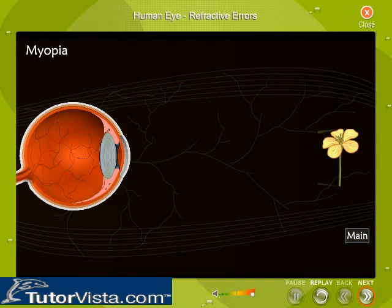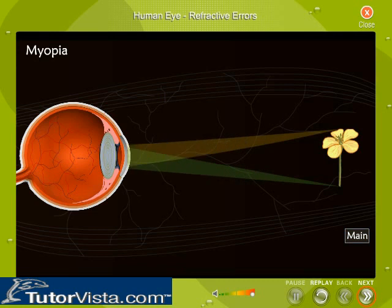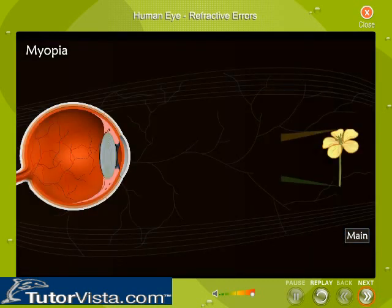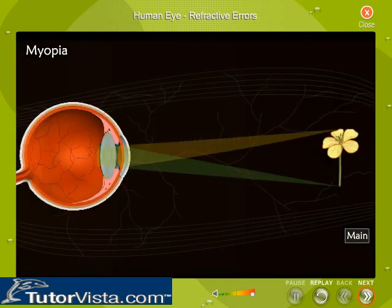In the case of a normal eye, the rays of light from the object fall on the eye and converge on the retina. Whereas in the case of a myopic eye, the light rays are focused in front of the retina.